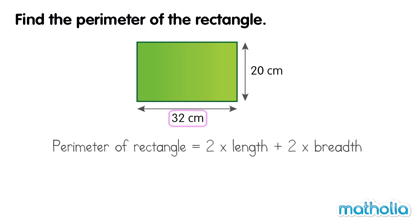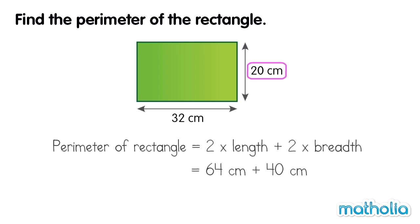The length is 32 cm. 2 times 32 cm equals 64 cm. The breadth is 20 cm. 2 times 20 cm equals 40 cm. 64 cm plus 40 cm equals 104 cm. The perimeter of the rectangle is 104 cm.